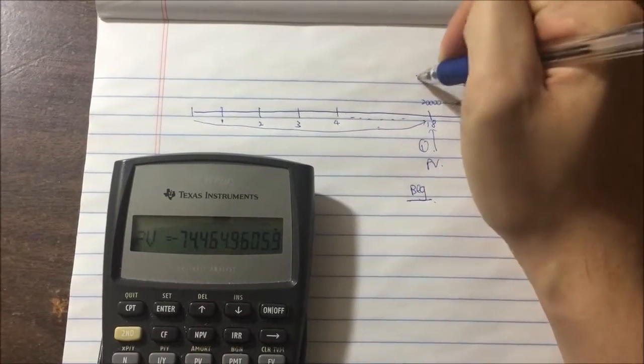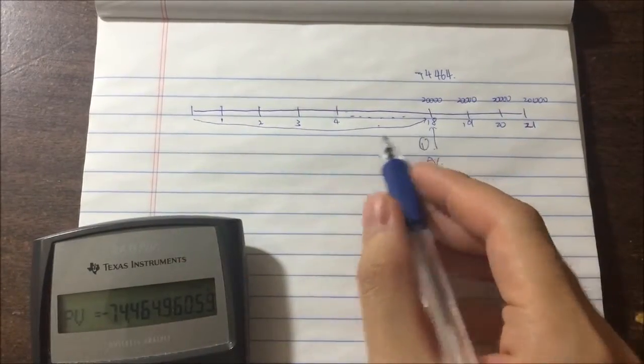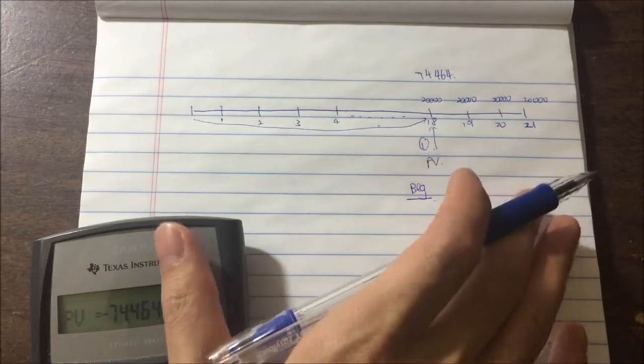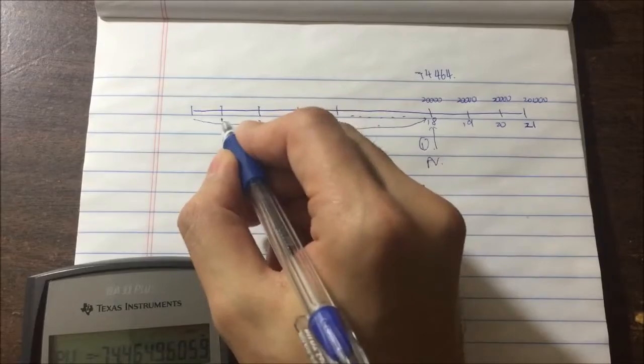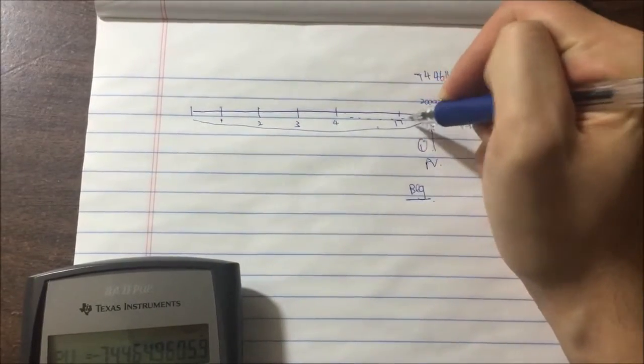There are a total of 17 payments. If you take a look at this carefully, make sure that you draw a timeline every time you encounter a discounting problem. Payment 17 is actually right here.